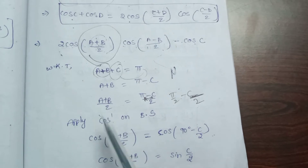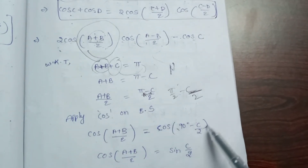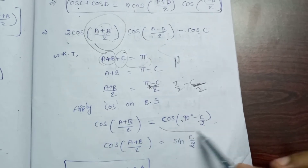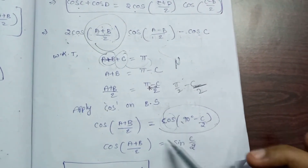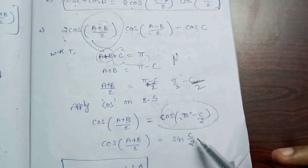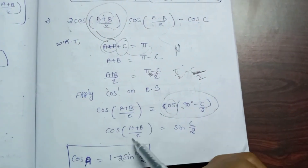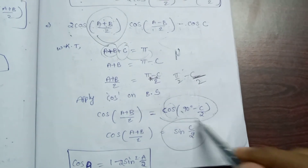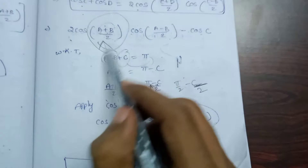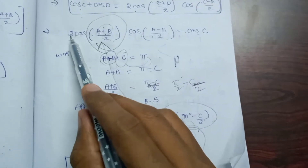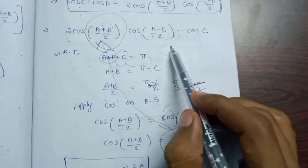Cos of (A+B)/2 is equal to cos of (90 degrees minus C/2), which equals sin(C/2). So cos((A+B)/2) is equal to sin(C/2). Here we substitute sin(C/2). So we now have 2 sin(C/2) cos((A-B)/2).